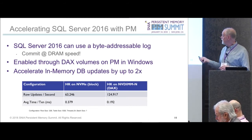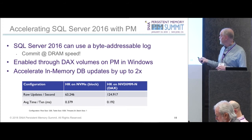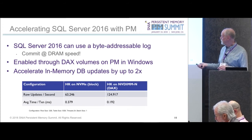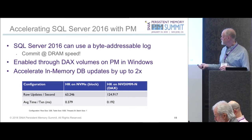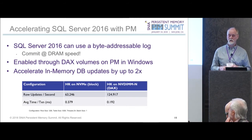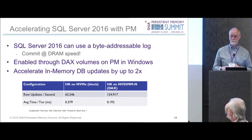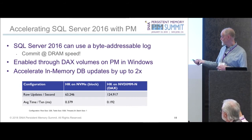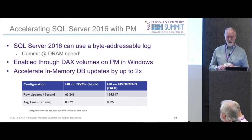This is fully enabled through a DAX volume on persistent memory in Windows. We get about a 2x speedup. HK means Hekaton — that's the in-memory version of SQL Server. You can see it's almost exactly 2x improvement and the latency is almost exactly half, which is the transaction commit latency.